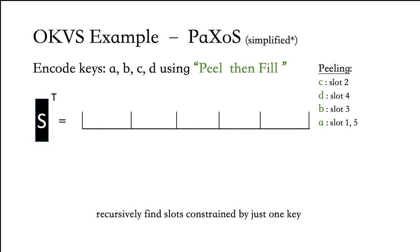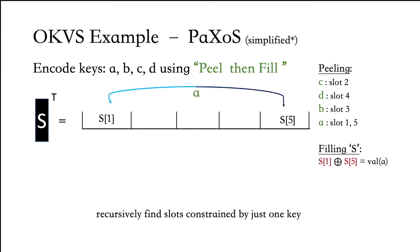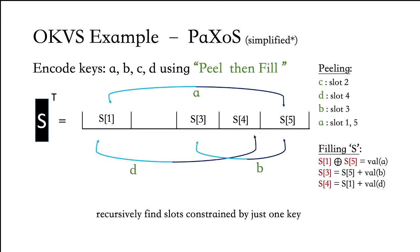For key A, we have two positions given by slots 1 and 5. We can pick any values for them as long as S1 XOR S5 matches the value of A. Next, for key B, S5 has already been occupied, so we assign S3 = S5 XOR value(B). For key D, S4 is unfilled and S1 has already been filled, so we assign S4 = S1 XOR value(D). Finally, we plug in the value for slot 2, given by S4 XOR value(C). So this worked out rather nicely.